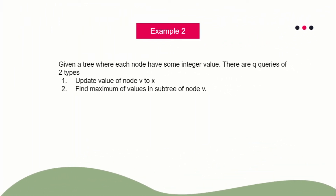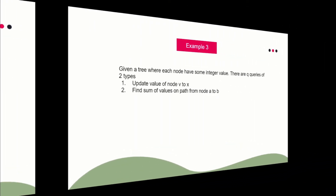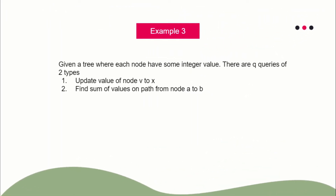The second type of problem: you update the value of node V to X (same query as before), and then you have to find the maximum value in the subtree of node V — again a subtree query. You can solve this using a segment tree. This is again a point update and a range maximum. I'll explain how in the next lecture.